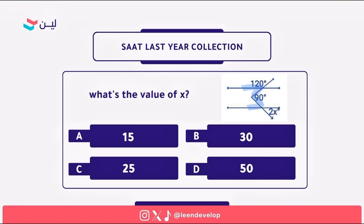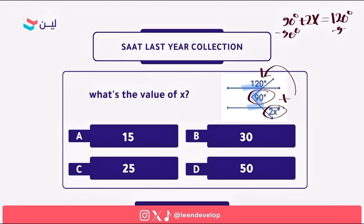Since we have an M-shape here between the angles, that means this angle and this angle — the sum of them will give us this angle. So: 90 degrees plus 2X equals 120 degrees. We subtract 90 degrees from both sides, giving 2X equals 30 degrees. Dividing both sides by 2, X equals 15 degrees. The answer is A.